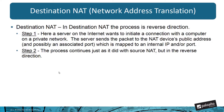Now let's take a look at destination NAT. In destination NAT, the process is basically the reverse. A server on the internet wants to initiate a connection with a computer on a private network. The server sends the packet to the NAT device's public address and possibly an associated port, which is mapped to an internal IP and/or port. The process continues just as it did with source NAT, but in the reverse direction.